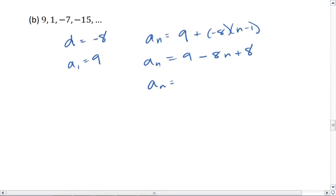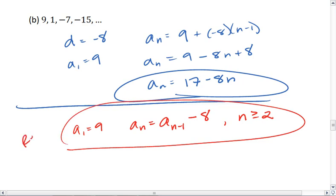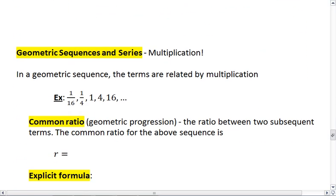Okay. But going back down here, I now have 17 minus 8n, and that's my explicit formula. If I want to do recursive, I know my first term is 9. I know each term is determined by taking the previous term a sub n minus 1 and subtracting 8 from it, and so this only works for terms 2 and above, for n is greater than or equal to 2. And that would be recursive, for n is greater than or equal to 2 as always.